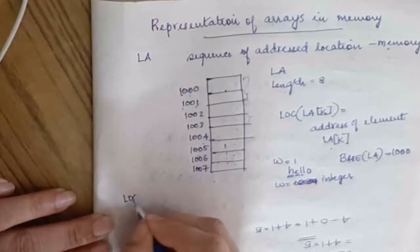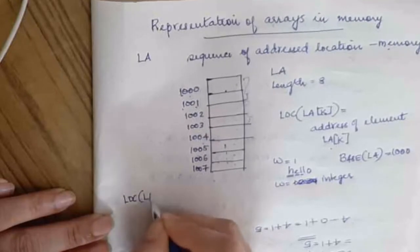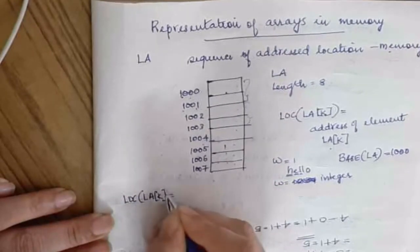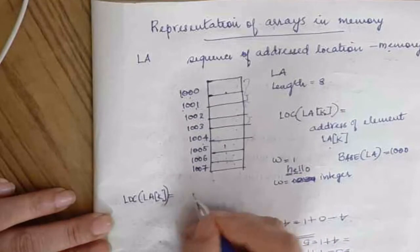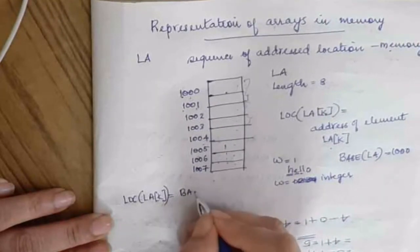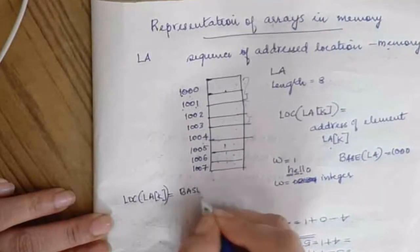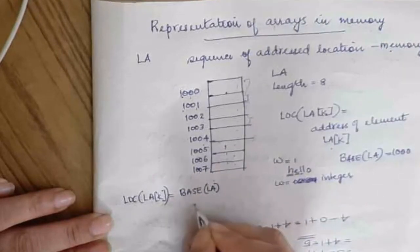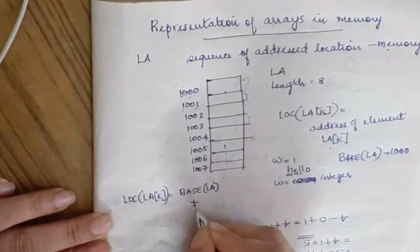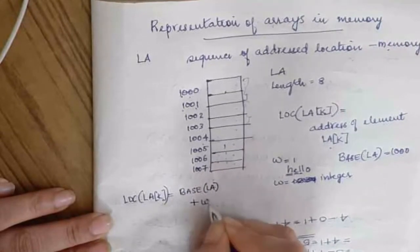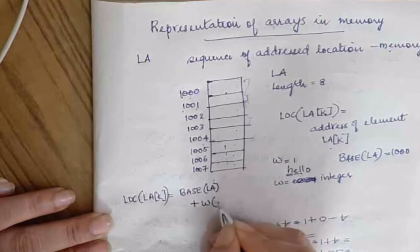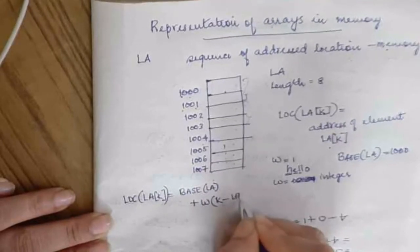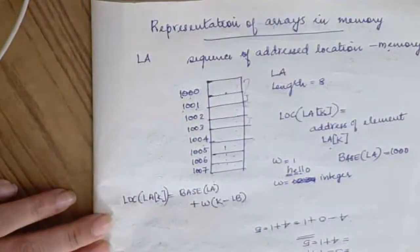The formula for the location is: Location of LA[K] = Base(LA) + W × (K − lower_bound), where W is the word length and lower_bound is the index of the first element.